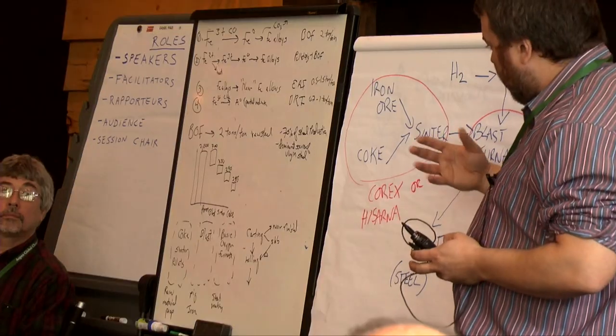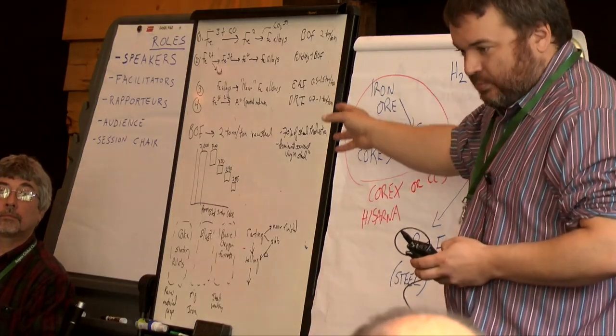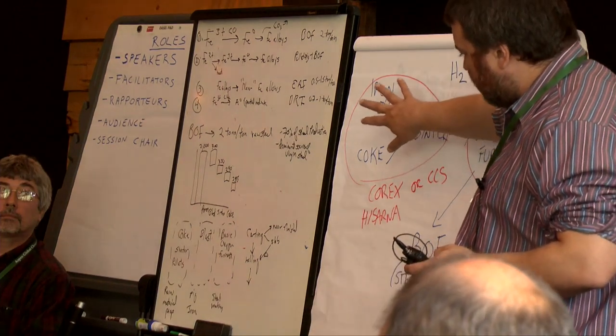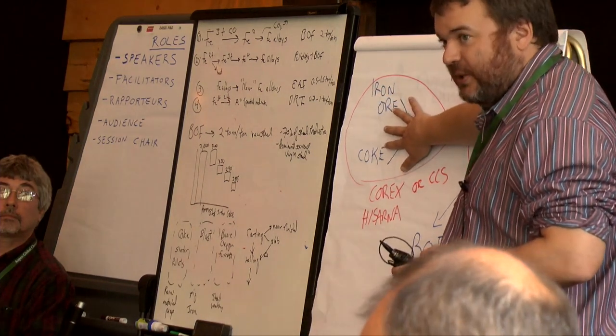Okay, so each of the processes there emit CO2 and requires energy. Your iron ore sintering plant requires a lot of energy, and the coking plants are very expensive. You have to use high-quality coal and make it into coke, and basically the steelmaking plant wants to get rid of as much of these bits as possible.